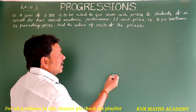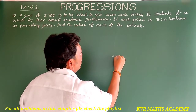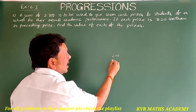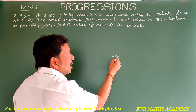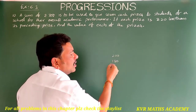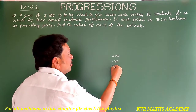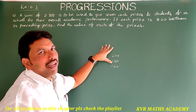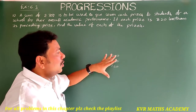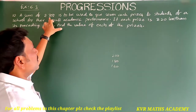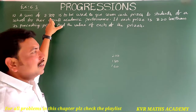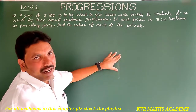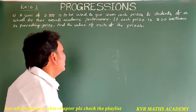Suppose 7 prizes are given. If the first prize is Rs. 200, then the second prize will be Rs. 20 less, that is Rs. 180. The third prize will be Rs. 160, and so on. Totally 7 prizes are given and the total amount to be distributed is Rs. 700. So let us find the amount of each prize.